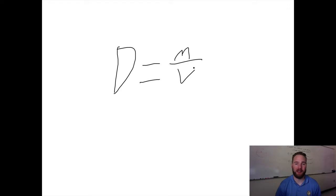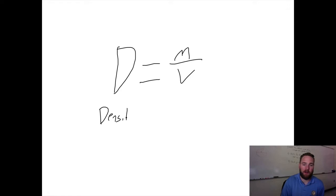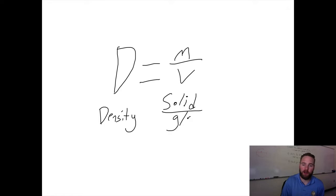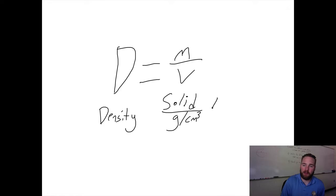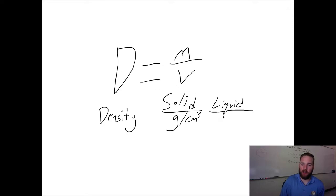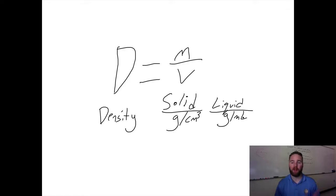We can take the density of a liquid or the density of a solid. Let's talk about the units. For the density of a solid, the unit is grams per centimeter cubed. For the density of a liquid, the unit is grams per milliliter. So grams per centimeter cubed is for solids, and grams per milliliter is for liquids.